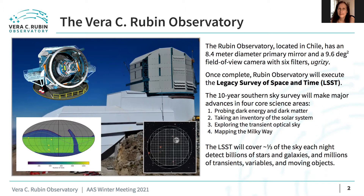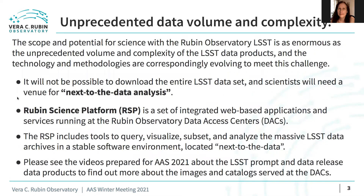Both the observatory and the survey are designed to make major advances in four core science areas: dark matter and dark energy, the solar system, transients and variable stars, and the Milky Way and local volume. The LSST will cover about one third of the sky each night and in total detect billions of stars and galaxies and millions of transients, variables, and moving objects. The scope and potential for science is as enormous as the unprecedented volume and complexity of the LSST data products, and the technology and methodologies are correspondingly evolving to meet this challenge.